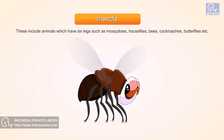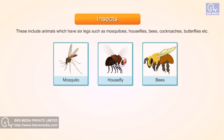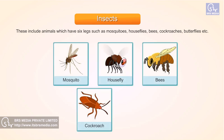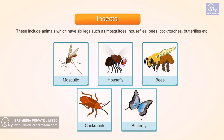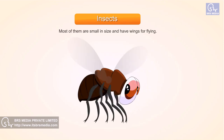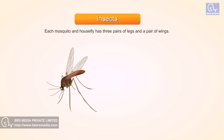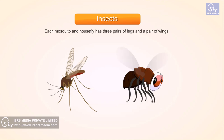Insects. These include animals which have six legs, such as mosquitoes, house flies, bees, cockroaches, butterflies, etc. Most of them are small in size and have wings for flying. Each mosquito and house fly has three pairs of legs and a pair of wings.